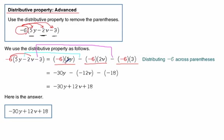Then we simplify each of those parts. So if we simplify the negative 6 times the 5y, we get the negative 30y. The minus sign stays the same. So then we multiply the negative 6 times the 2v to get a negative 12v. We multiply the negative 6 times the 3 to get a negative 18. But be careful with those signs. Notice how these signs stay the same and these signs stay the same.